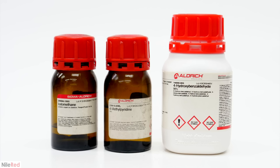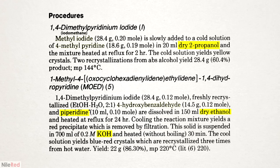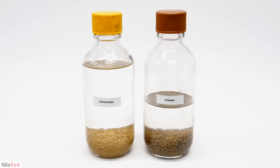So what I ended up picking up was iodomethane, 4-methylpyridine, and 4-hydroxybenzaldehyde. The other ingredients that I still needed was 100% isopropanol and ethanol, piperidine, and potassium hydroxide. I got the isopropanol from a local dental supply company, and I actually made the ethanol myself by fermenting sugar, distilling it, and then drying it.